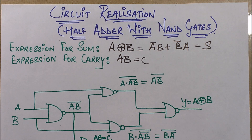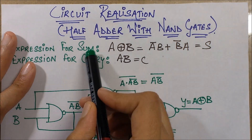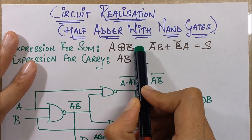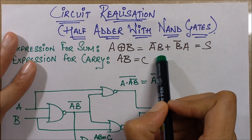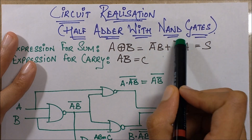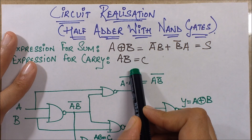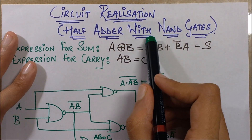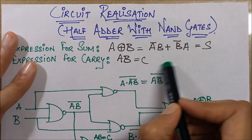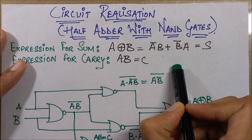I assume that you all know what is the sum and carry expression of a half adder. The sum expression is A XOR B, where A and B are two inputs. A XOR B is also written as A'B plus B'A, and the carry expression is AB. What we need to do is construct a circuit which is able to deliver these two outputs given the two inputs A and B.